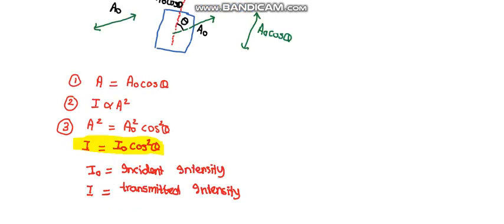Where I naught is the incident intensity and I is the transmitted intensity. Let's see a graph for the expression I equals I naught cos square theta.